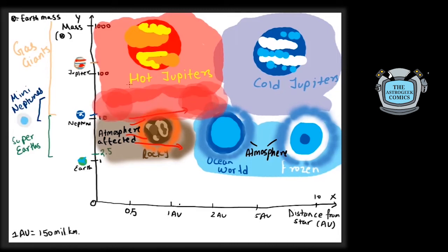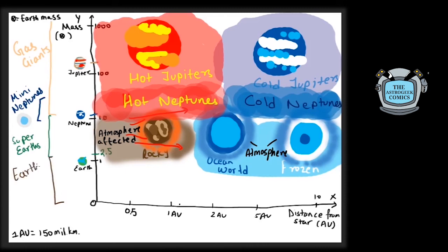If these mini-Neptunes are formed closer to their stars, they are called hot Neptunes. Planets with mass less than twice the mass of Earth are characterized as Earth-like planets. Being Earth-like is only a reference to their size and not any other characteristics.